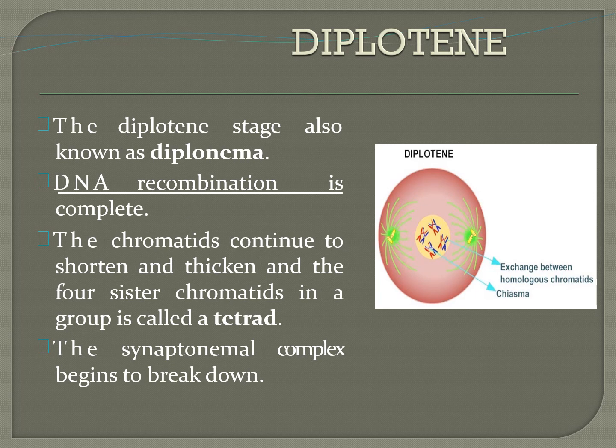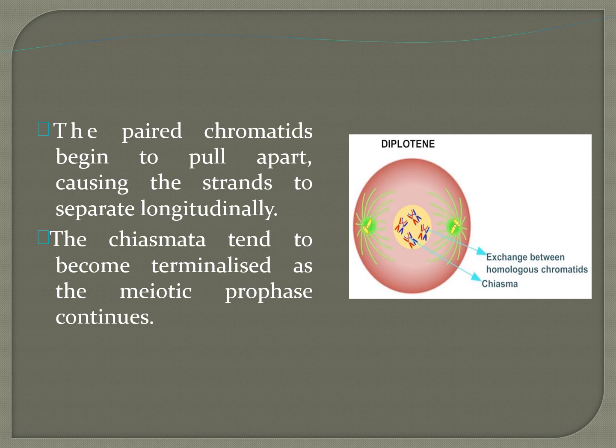The next stage is diplotene, also known as diplonema. In this stage, DNA recombination is complete. The chromatids continue to shorten and thicken, and four sister chromatids are produced; this group of four chromatids is called a tetrad. The synaptonemal complex begins to break down. The paired chromatids begin to pull apart, causing the strands to separate longitudinally. The chiasmata tend to become terminalized as meiotic prophase continues.